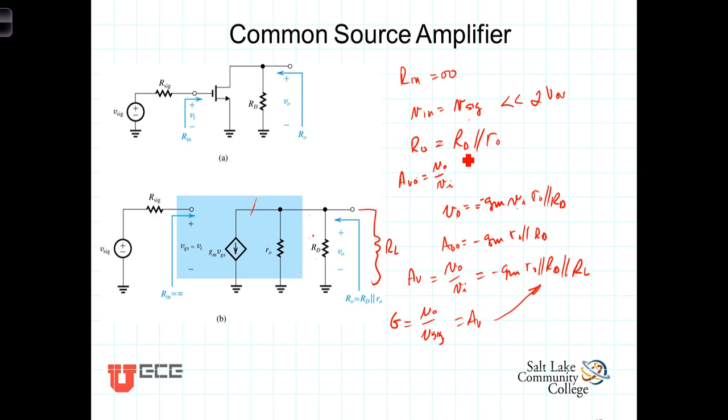We'd like to have the output resistance small, which means R sub D ought to be small, but we want to keep the gain up so that means R sub D needs to be big. The bottom line is that the common source amplifier has a relatively large output resistance, and that's a drawback.